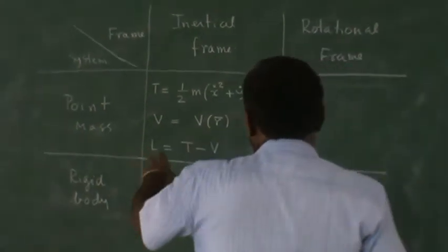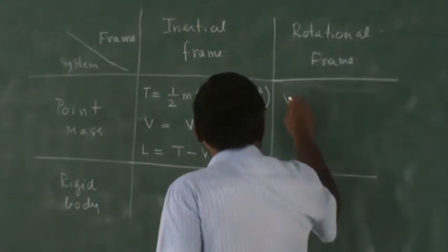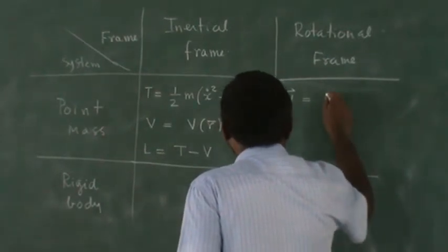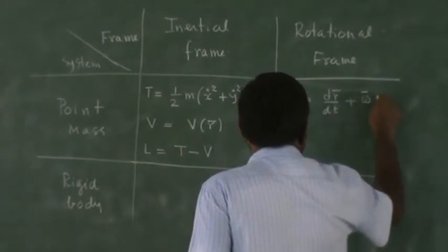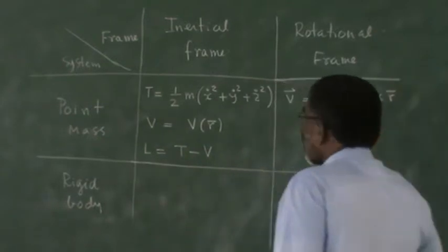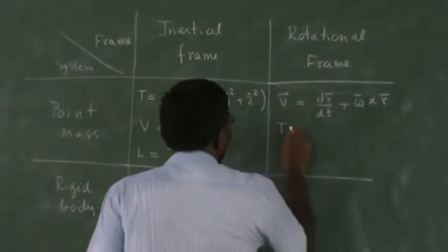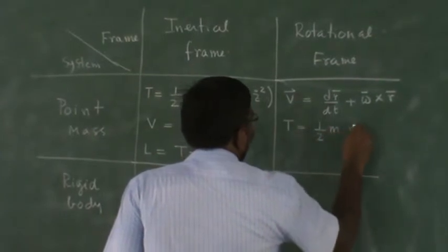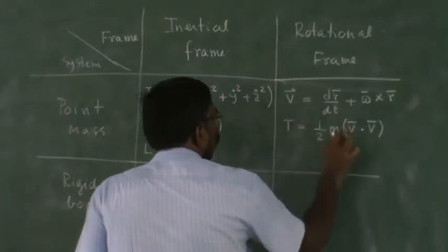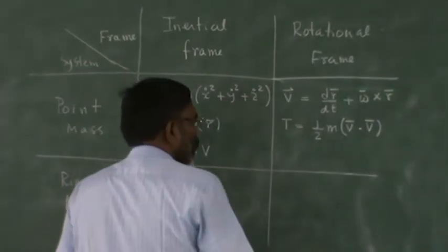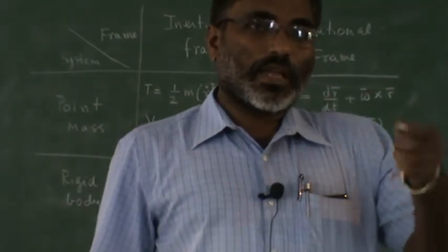Now if you have this point mass in the rotational frame, then I first ask you to find out the velocity of the point mass as dr/dt plus omega cross r, where omega is the angular velocity. And then find the kinetic energy as half m V dot V. Use this V to find out the kinetic energy, not as seen in the rotational frame, as seen from the inertial frame.